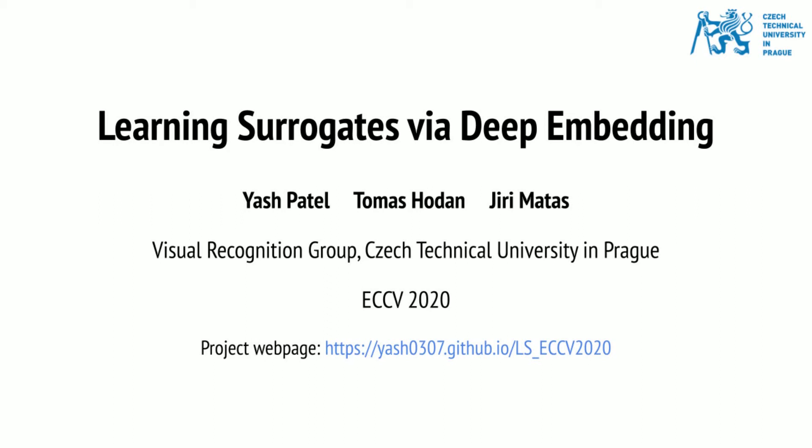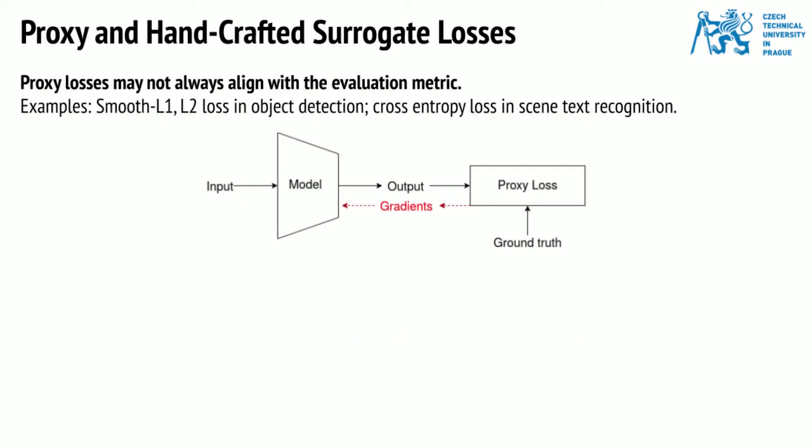We propose a technique for training a neural network by minimizing a surrogate loss that approximates the target evaluation metric, which could be non-differentiable. Neural networks for computer vision tasks are often trained using simple proxy losses that may not align well with the evaluation metric, in turn leading to a suboptimal performance.